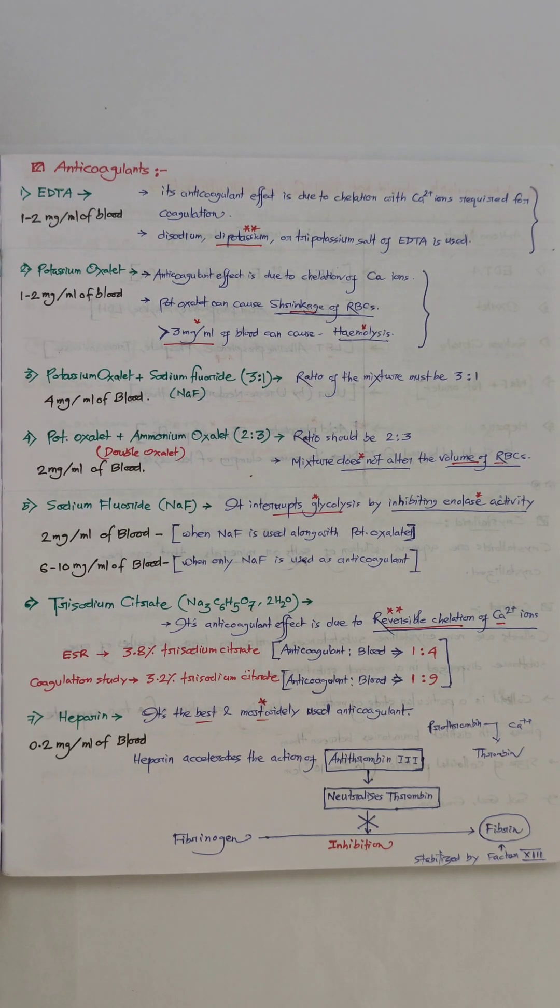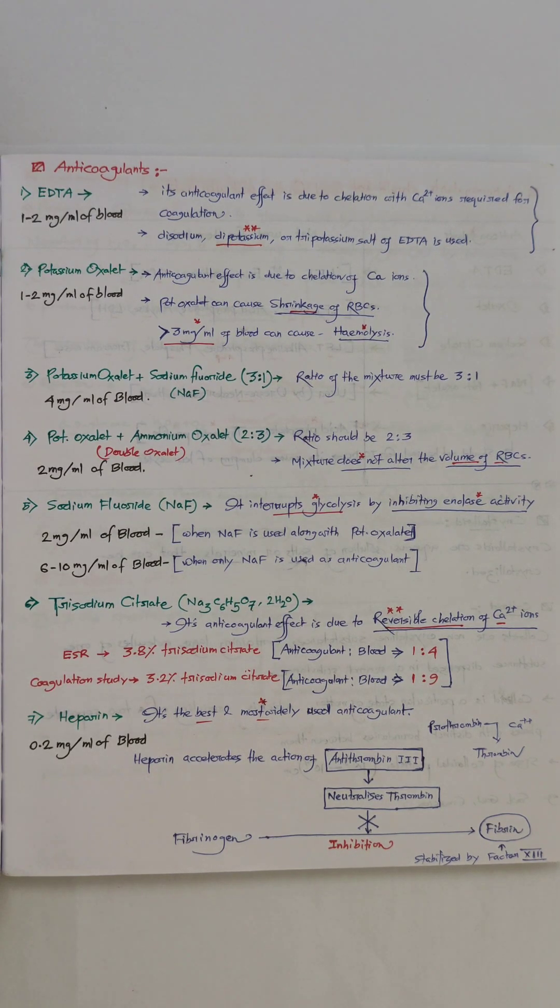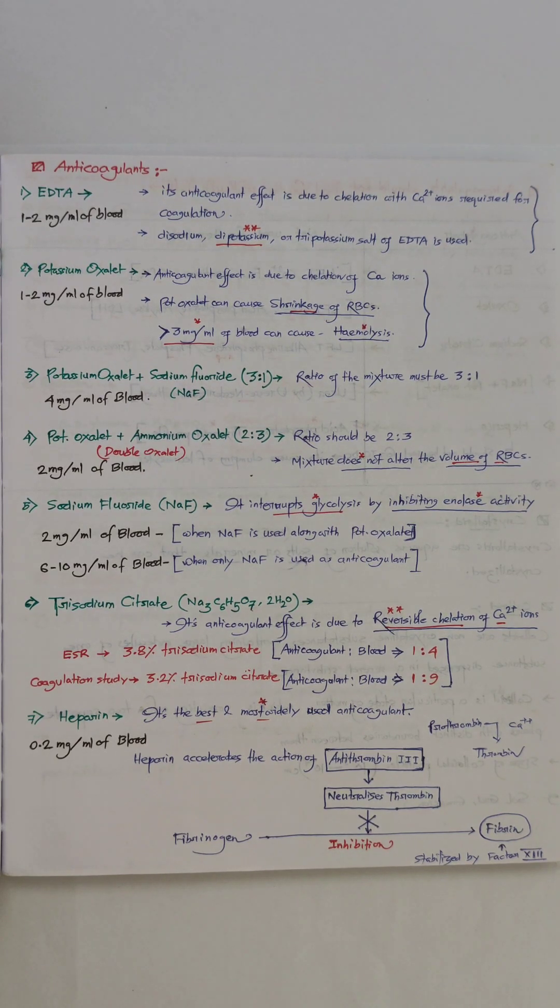Excessive amount of potassium oxalate can cause hemolysis. Number three: to prevent shrinkage of RBC or hemolysis, potassium oxalate is used along with sodium fluoride at a ratio 3 to 1—potassium oxalate 3 and sodium fluoride 1 part. Required quantity is 4 mg per ml of blood.